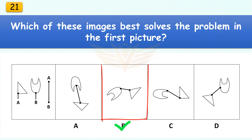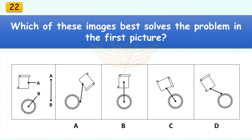Which of these images best solves the problem in the first picture? The correct answer is B. Rotate the batman symbol 135 degrees and the triangle 90 degrees.